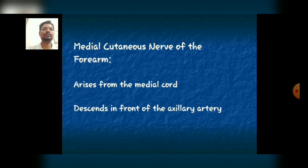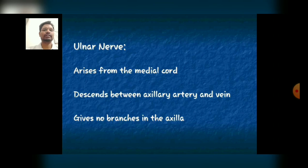The medial cutaneous nerve of the forearm arises from the medial cord and descends in front of the axillary artery. The ulnar nerve also arises from the medial cord and descends between the axillary artery and vein.